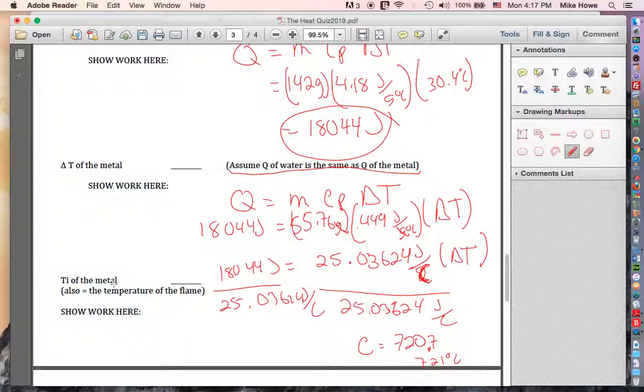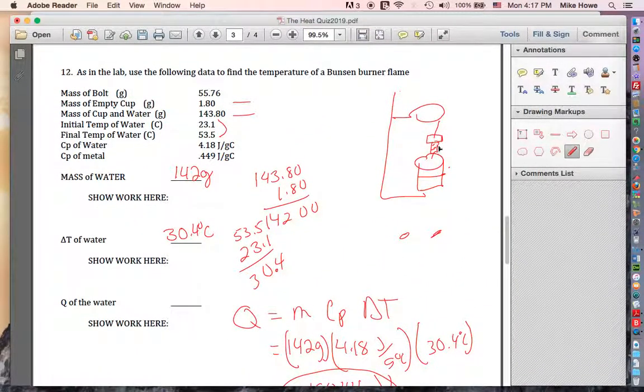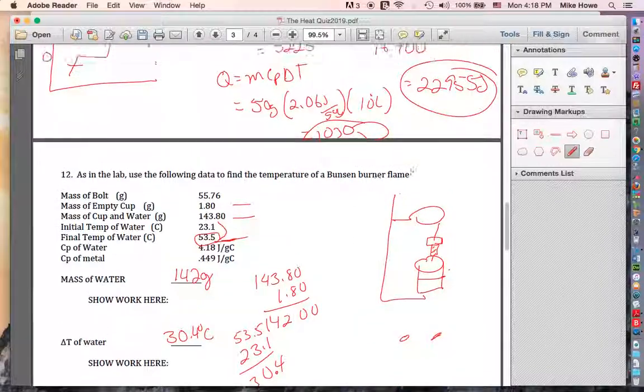Our last thing is Ti of the metal. So if you go up to the picture again, remember the metal was hanging in a flame before I took the flame away. So we're going to assume that the metal was the same temperature as the flame. But when I put the metal in the water, the metal got way colder in terms of temperature. So the temperature had a massive drop, several hundred degrees. We know that the final temperature of the metal would have come to be the same temperature as the water in the cup. So we know the final temperature of the metal. That's 53.5 right there. We don't know the beginning temperature, and that would be the temperature of the flame.